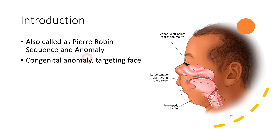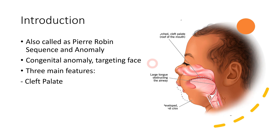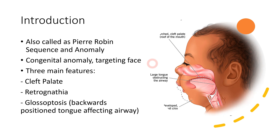This is a congenital anomaly which targets mainly the face, but there are other systemic features which can also be encountered in such patients. The three main features are: firstly, cleft palate; then retrognathia, which is the backward positioning of the mandible; and lastly, glossoptosis, which basically means the enlarged tongue is placed backwards, thereby compromising the respiratory function of such patients.